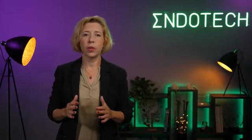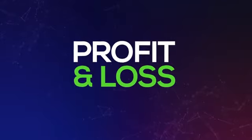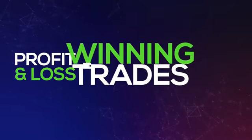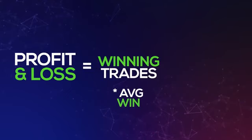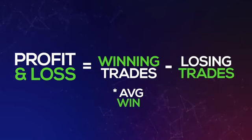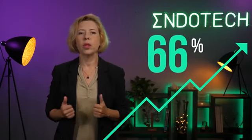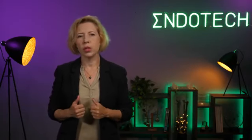This is enough to make a winning strategy, and here's why. Profit and loss equals the number of winning trades multiplied by average profit of the winning trades, minus the number of losing trades times the average loss. If 66% accuracy is reached and the average win-loss ratio is sufficiently small, the strategy will be profitable and quite stable.